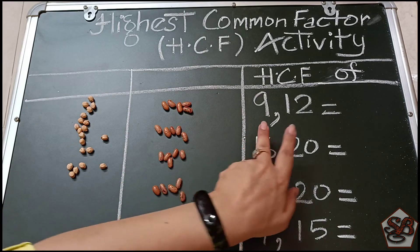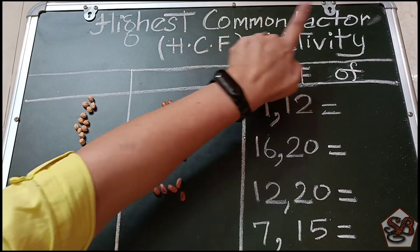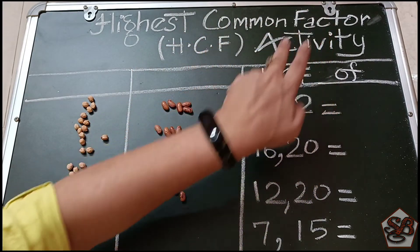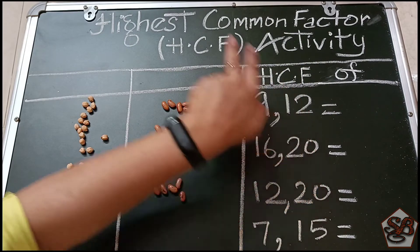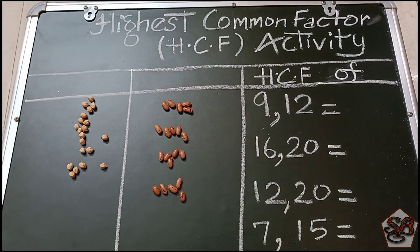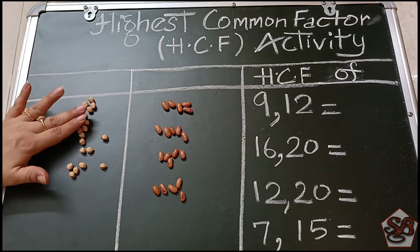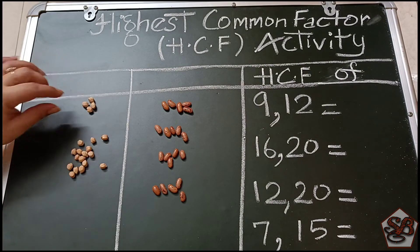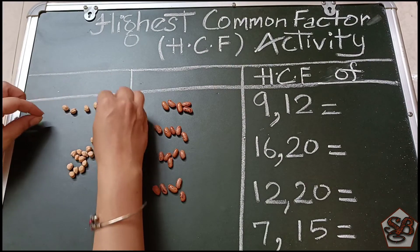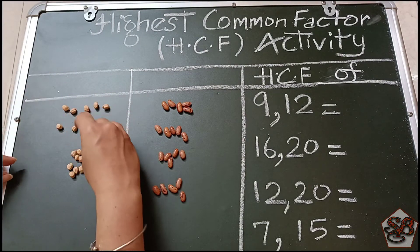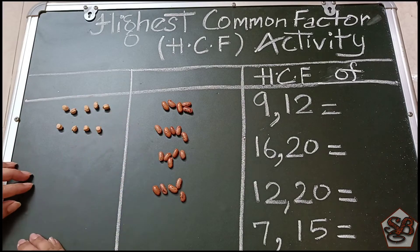In this, we have to find the HCF, or the highest common factor, of 9 and 12. First of all, let's take 9 chana seeds: 1, 2, 3, 4, 5, 6, 7, 8, and 9. The rest I'll keep aside.